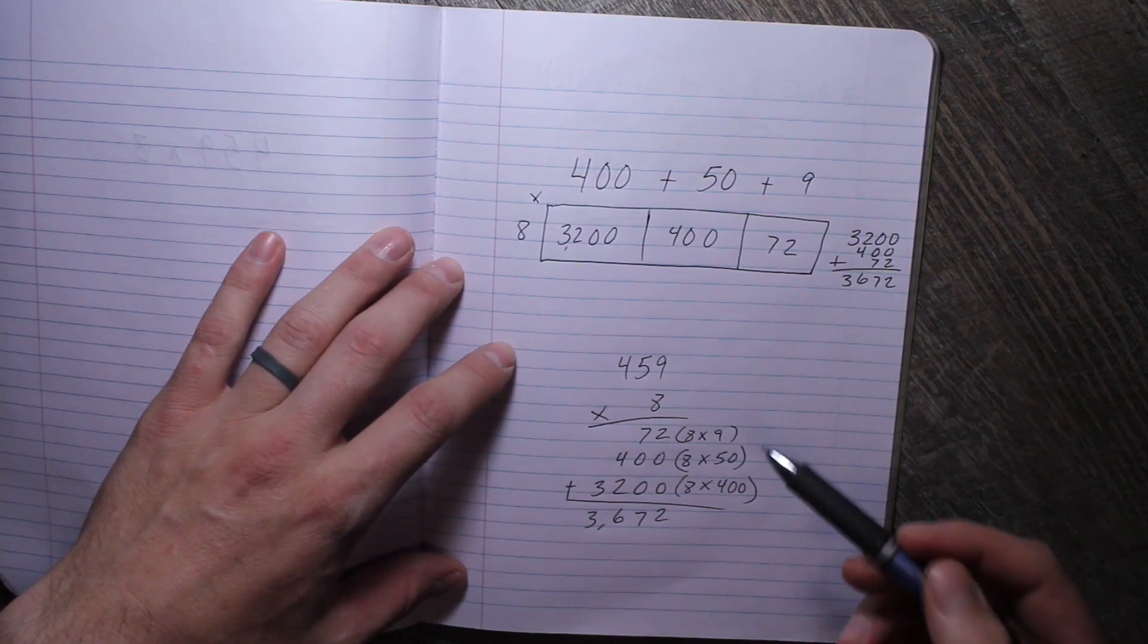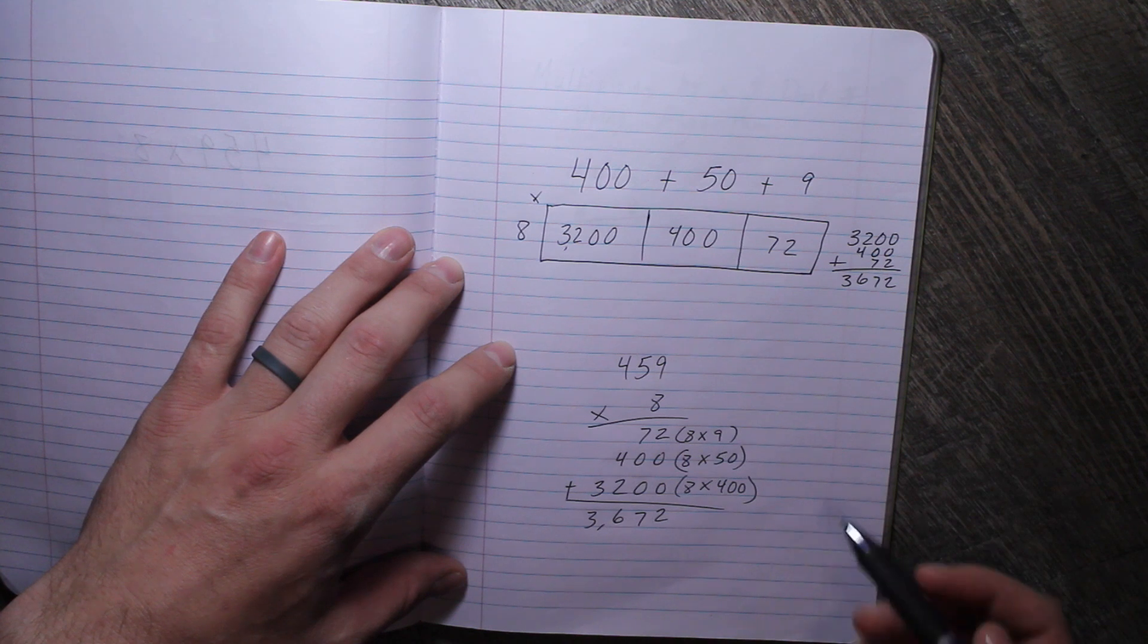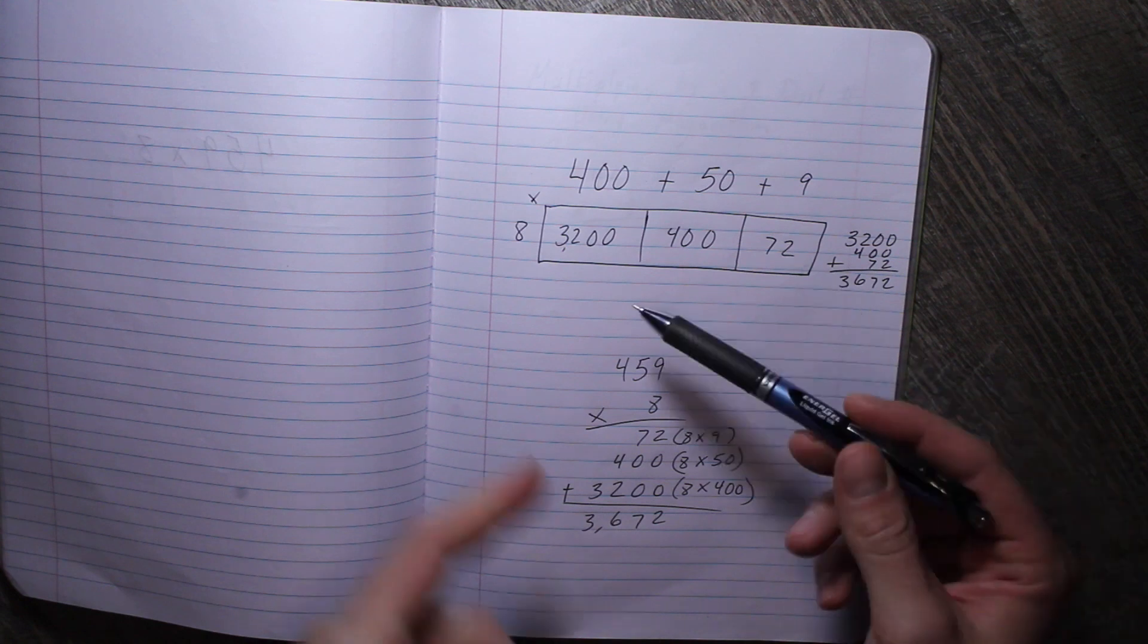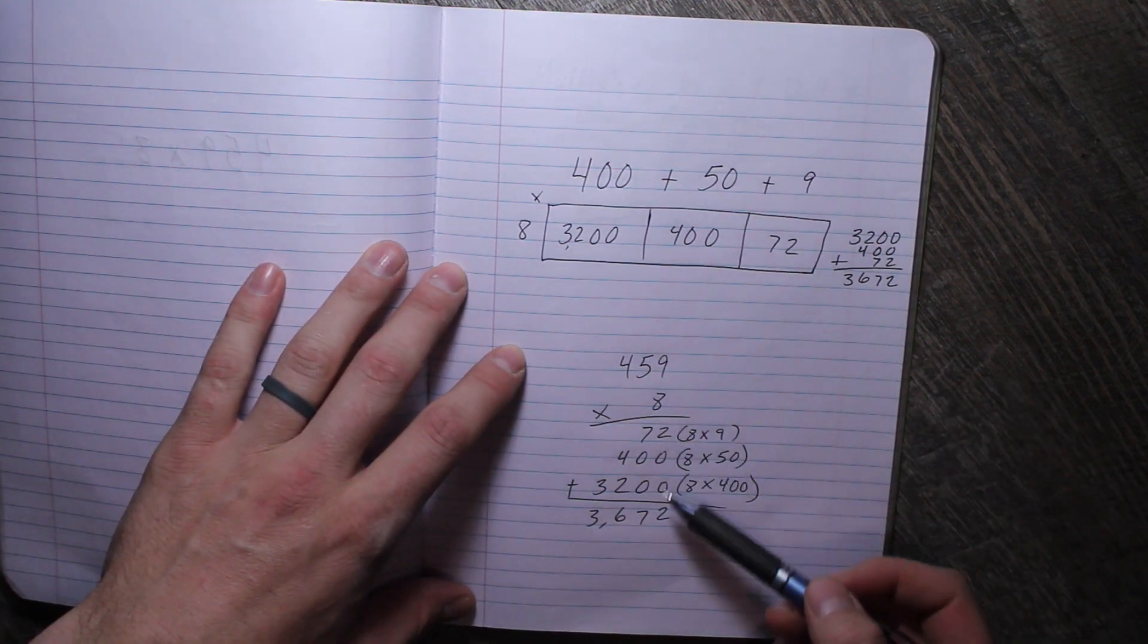And then some of you have made the next step and gone to 459 times 8 using partial products. So with this method, you're still using the value of the digits, multiplying them together, and then you add them up.